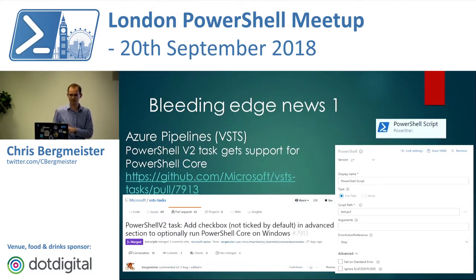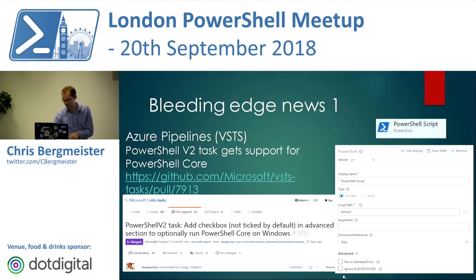Up until now you had to run an execute command step and basically use the -Command or -File parameter on the pwsh executable. This new checkbox will allow you to run PowerShell Core directly, just as you're used to running PowerShell, without all the complexity. Watch out for this checkbox — it will only be on version 2 tasks, so if you're still on version 1 you'll have to upgrade.